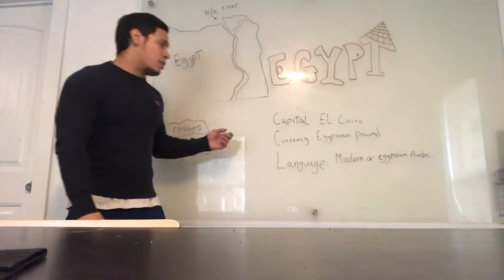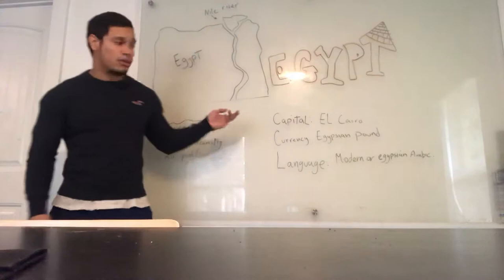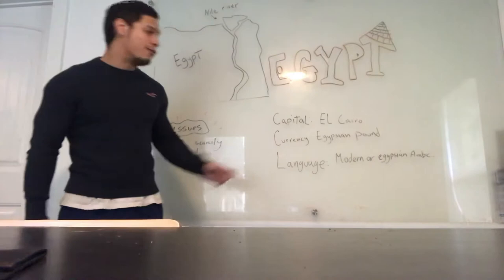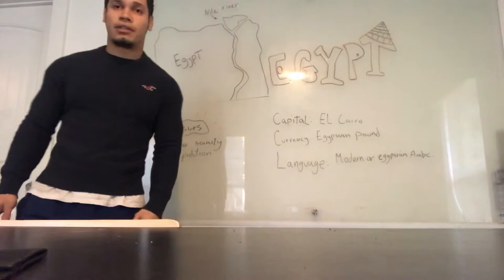So Egypt, capital of Egypt is El Cairo. I'm actually going to be talking about this city with my geographical issues. El Cairo is also the biggest city of the country. For the currency, they use the Egyptian pound, and for the language, the official language is Modern Arabic, but they use mostly Egyptian Arabic.